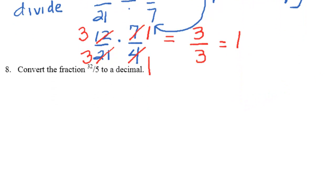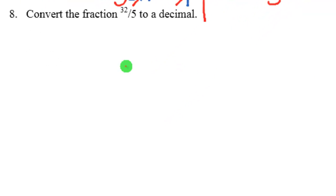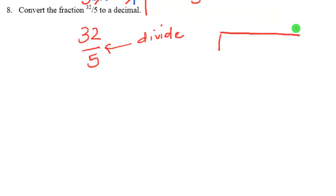Again, if you need to see that again, just rewind and watch how we did that. Okay, and finally, our last one says, convert the fraction 32/5 to a decimal. So you know that this little bar in a fraction means divide. The numerator is the dividend, which means it's going to go inside here. And the denominator is your divisor. So you're dividing by the 5. So the 5 goes out here.